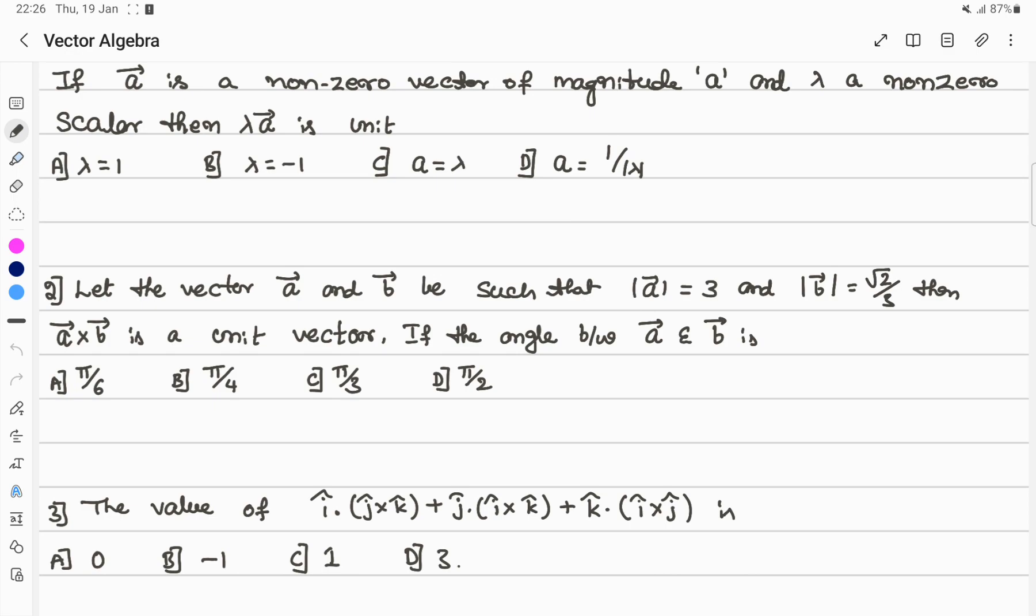First question: if a is a non-zero vector of magnitude a and lambda is a non-zero scalar, then lambda a vector is a unit vector. What is the value of lambda? This is a very simple question.